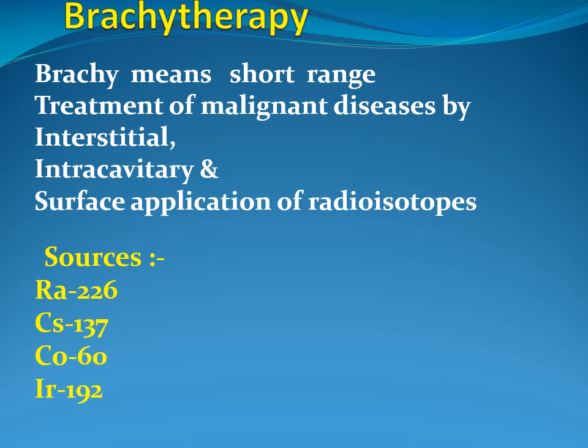The commonly used radioisotopes for brachytherapy are radon, cesium, cobalt, and iridium. The radon radioisotope is called RA-226, the cesium radioisotope is CS-137, cobalt is cobalt-60, and iridium is in the form of IR-192.